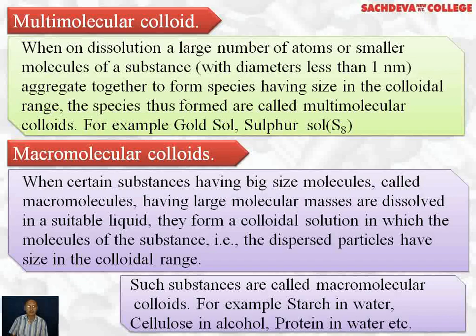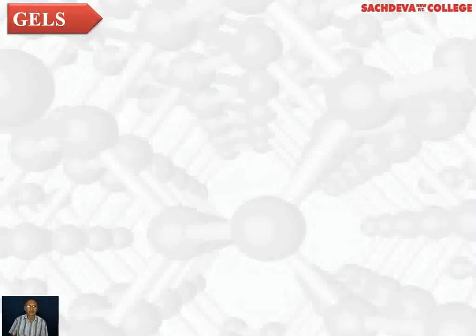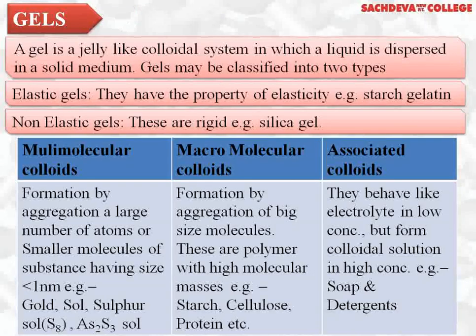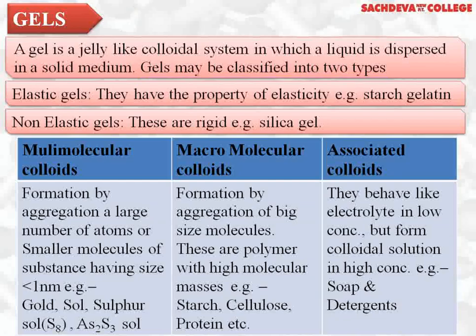Next, we take up gels. A gel is a jelly-like colloidal system in which liquid is dispersed in a solid medium. Gels are further classified into two types: elastic gels, which have the property of elasticity — for example, starch and gelatin — and non-elastic gels, which are rigid — for example, silica gel.